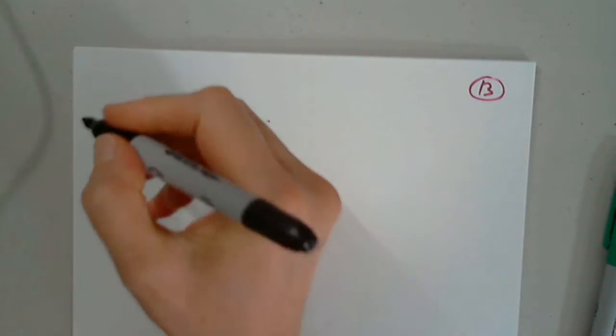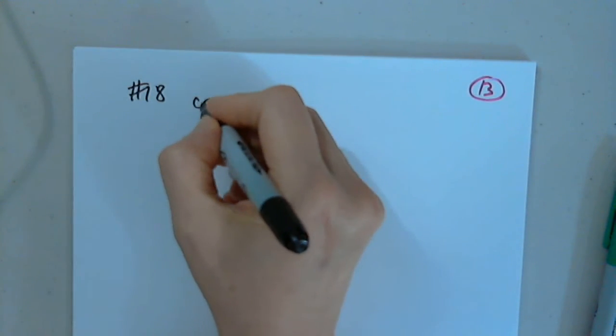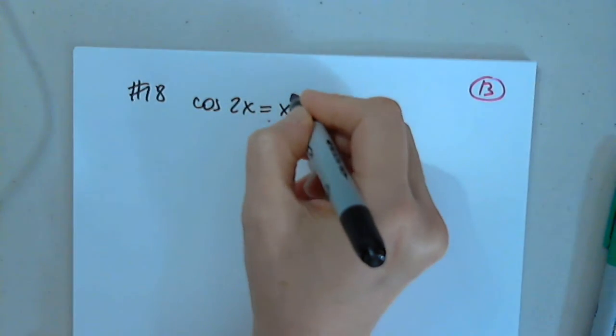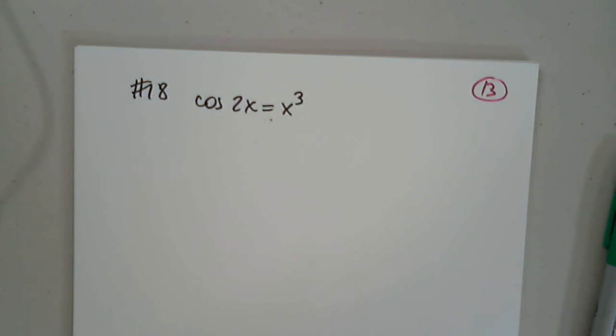So choose any equation you want to work on. Let's try number 18. Very good. So that's cosine 2x equals x to the third.